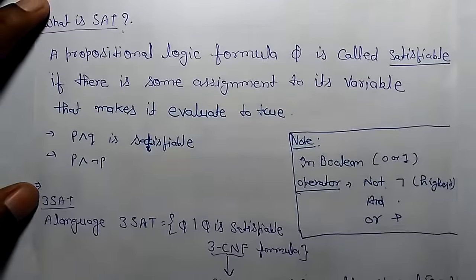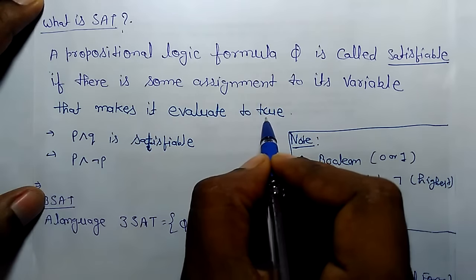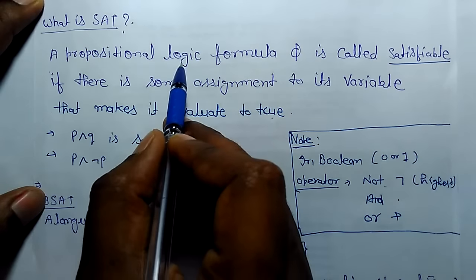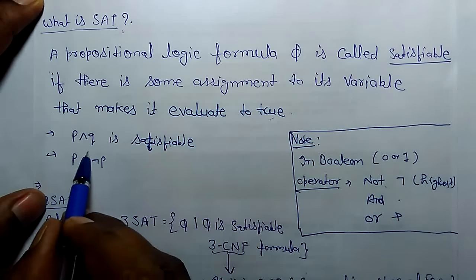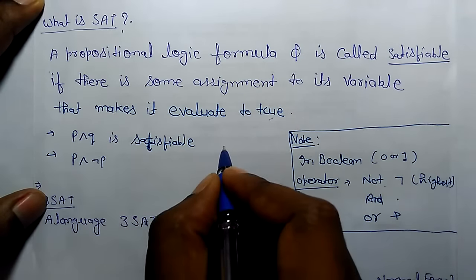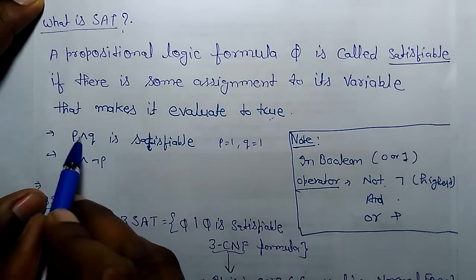So what is satisfiability? A propositional logic formula phi is called satisfiable if there is some assignment to its variables that makes it evaluate to true. For example, P and Q is satisfiable if P equals 1 and Q equals 1, then it will be true.